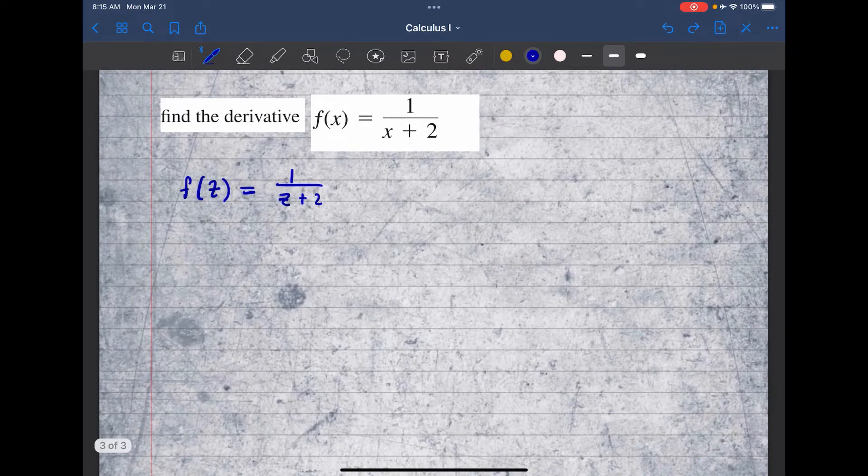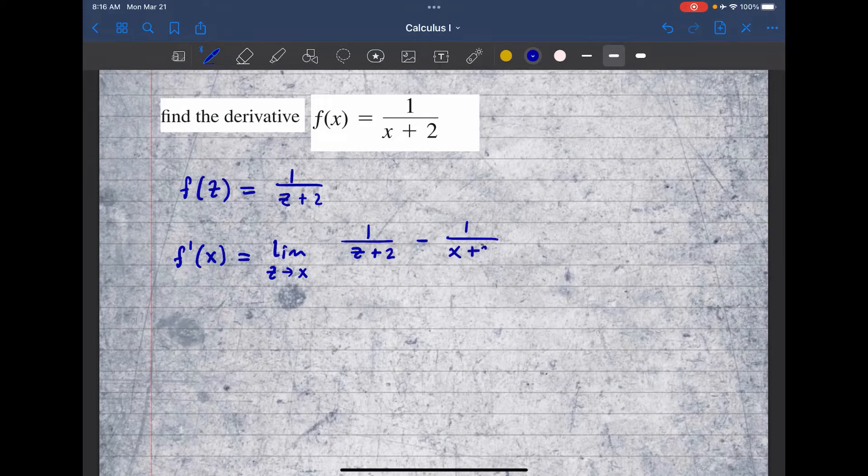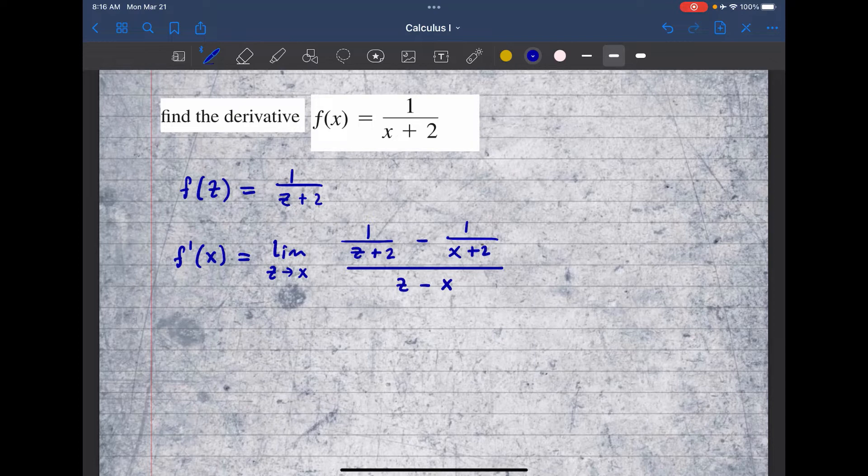So we know that f'(x) is equal to the limit as z approaches x of f(z). That's the one I computed above. So that's 1 over z plus 2 minus f(x). That's 1 over x plus 2 all over z minus x.